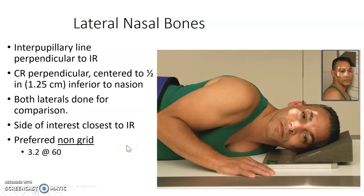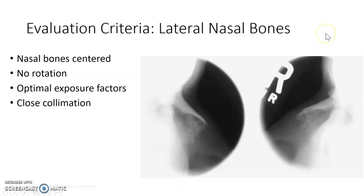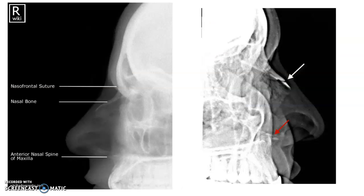You're going to do both — right and left. Make sure you mark the side of interest. Looking at right and left, these are nicely collimated. They have a cone here, that's why it's a circular collimation. Yours won't have that because we don't have those at our site. This image is demonstrating a nasal bone fracture, and I like this one for the anatomy identified.